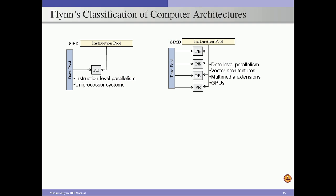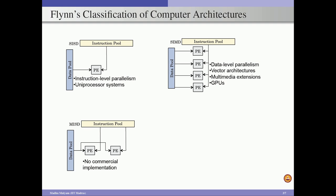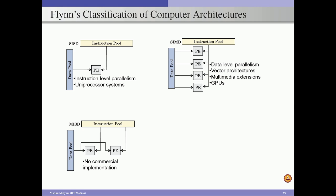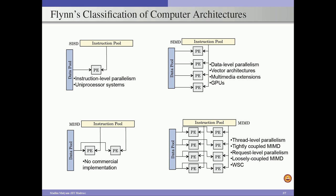The third class is MISD — Multiple Instructions, Single Data stream — which is defined for completeness but has no commercially viable implementation. The fourth class is MIMD — Multiple Instructions, Multiple Data — where instructions from multiple instruction streams operate on multiple data streams simultaneously, exploiting thread-level parallelism; multi-core processors are an example of systems belonging to this class.